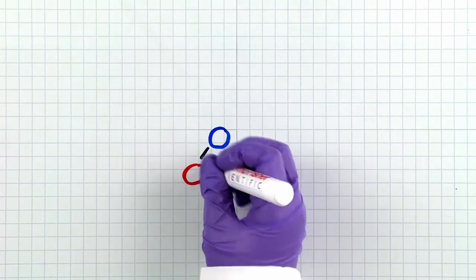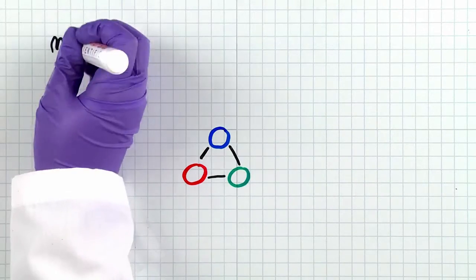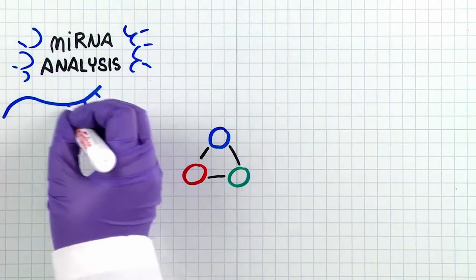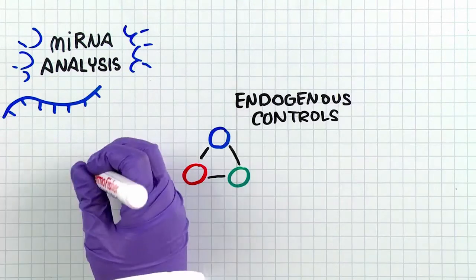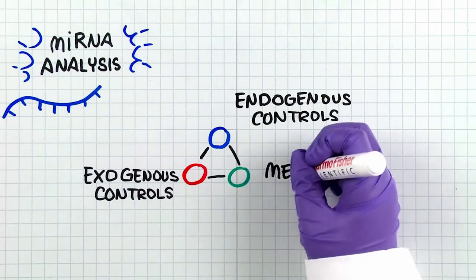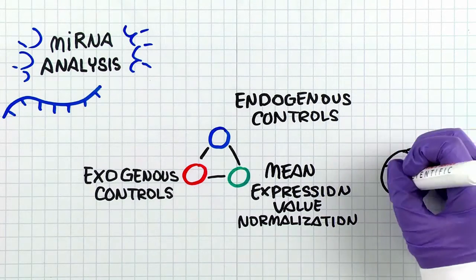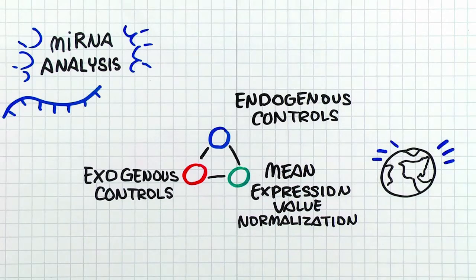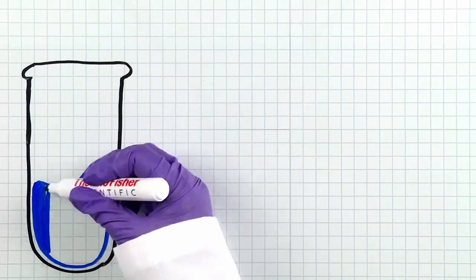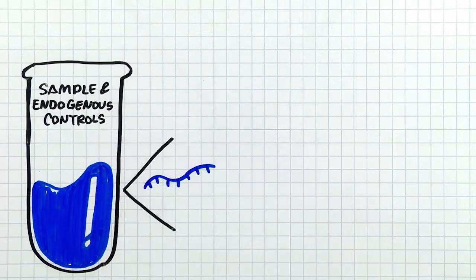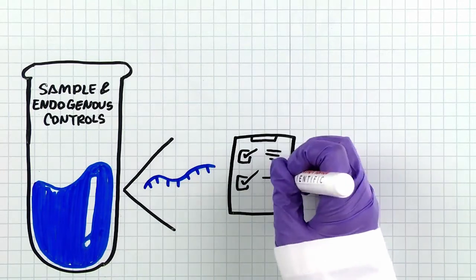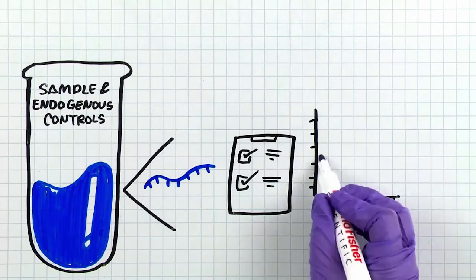So let's get technical and look at our lab book. There are three types of normalization methods commonly used for microRNA analysis by qPCR: endogenous controls, exogenous controls, and mean expression value normalization, or global mean normalization. Normalization using endogenous control genes is currently the most accurate method to correct for potential differences in RNA input or RT efficiency bias.